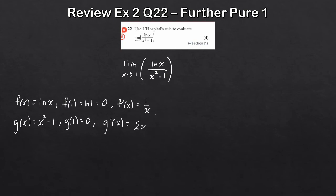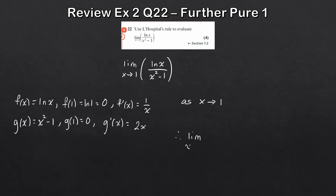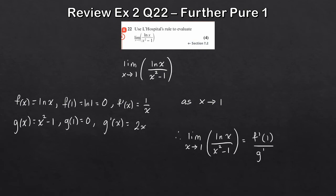As x tends to 1: f′(1) = 1/1 = 1 and g′(1) = 2. So the limit of ln(x) over (x² − 1) as x tends to 1 equals f′(1) over g′(1) = 1 over 2, which gives us one half.